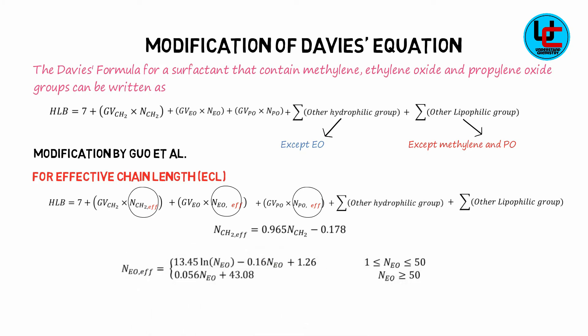Similarly, N-EO effective is equal to 13.45 log of N-ethylene oxide minus 0.16 N-ethylene oxide units plus 1.26 when N-ethylene oxide units in the molecules are between 1 and 50. And N-ethylene oxide effective is equal to 0.056 N-ethylene oxide unit plus 43.08 when N-ethylene oxide units are greater than or equal to 50.